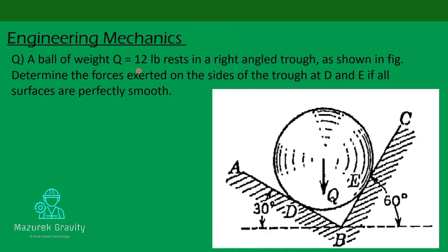Today's problem: a ball of weight Q equal to 12 lb rests in a right-angled trough as shown in the figure. Determine the forces exerted on the sides of the trough at D and E if all surfaces are perfectly smooth. We need to find the forces exerted by this ball on side BC and on side AB of the wall.